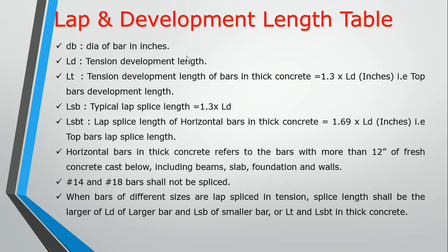For example, if bar number is No. 3 and No. 4, they have two bar sizes. As the bar numbers increase, we can transfer the number. The splice length will be the larger of LD of the larger bar and LSP of the smaller bar, where the greater value governs. Now we have two different bar sizes in one lap.